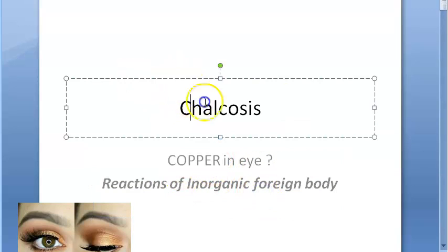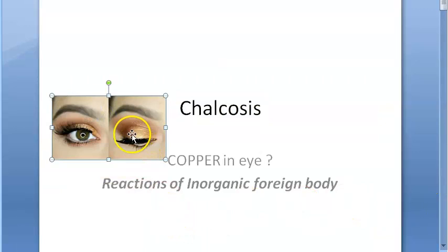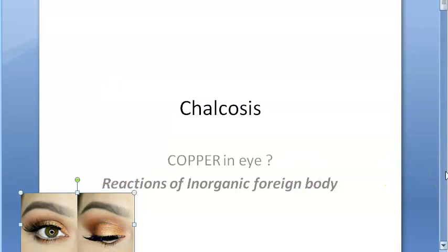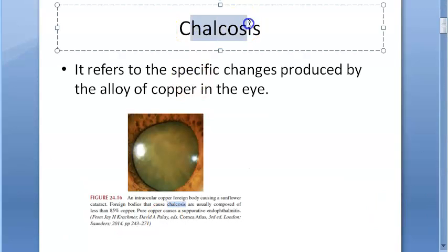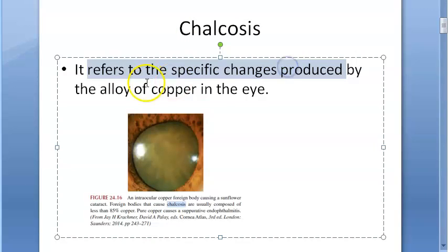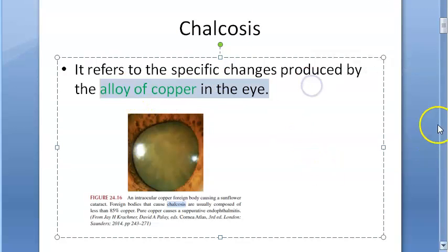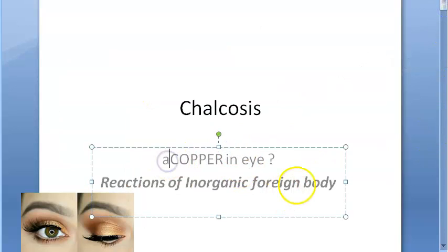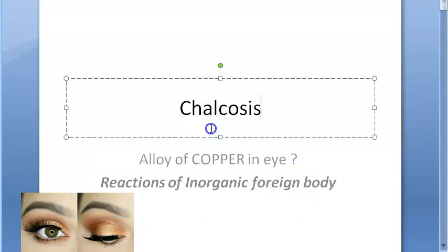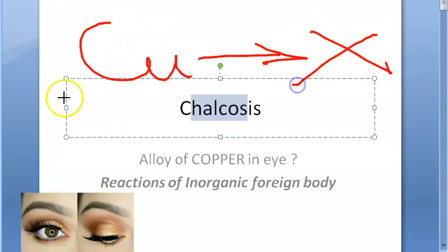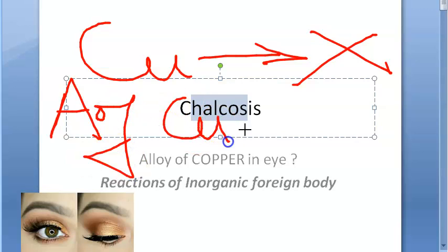So copper in the eye causes chalcosis. When we Google 'copper in eye', we get makeup results, but that is not what we mean. Copper in the eye as a foreign body — not the color of makeup. Chalcosis refers to the specific changes produced by the alloy of copper in the eye. It is not pure copper — it is an alloy of copper that results in chalcosis.